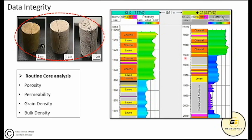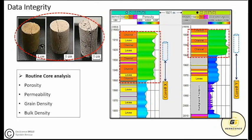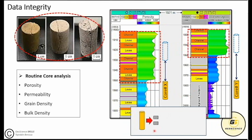One more example: when the core-log depth shift process is done erroneously, it will locate core samples at the wrong depth relative to the good reservoir property interval. This will lead to the wrong selection of core plugs allocated for scale analysis, and we will end up with measured scale data not representative of the net pay interval or the potential reservoir interval. So core depth shift must be done correctly if we want to obtain valid and representative scale data.